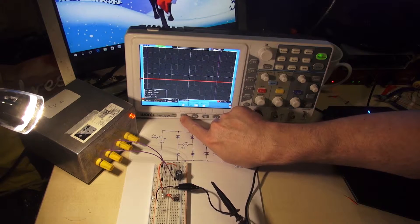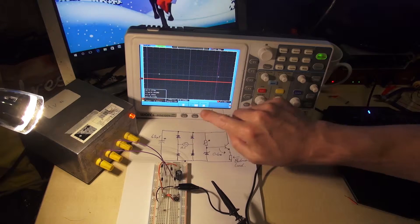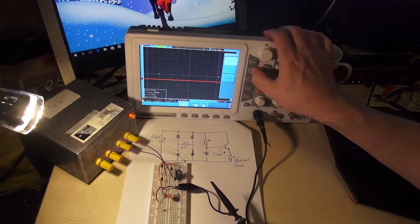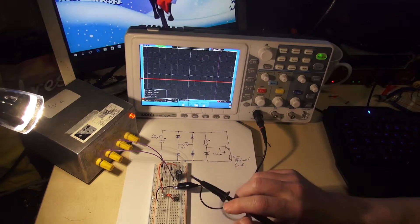If I change this coupling over to AC, so we can zoom in on the ripple, I hit the coupling button here and then hit AC.